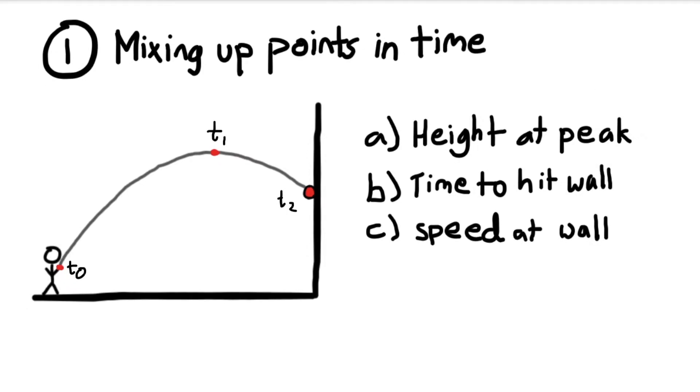So the first common error is mixing up points in time. If we look at this example problem, we're being asked to solve for several things. We need to solve for the height at the peak, the time to hit the wall, and the speed at the wall.